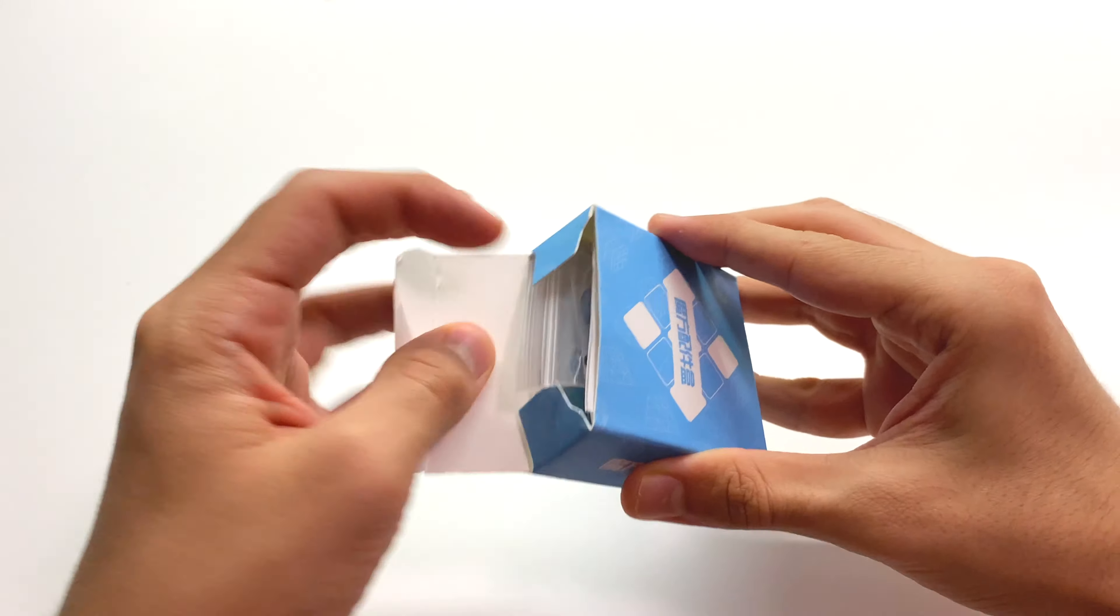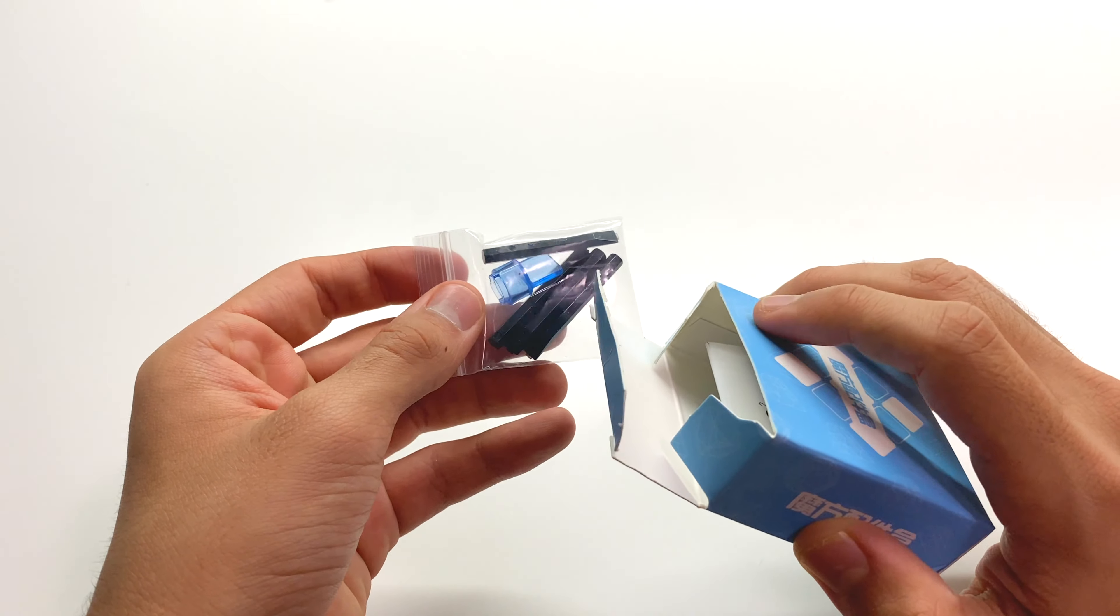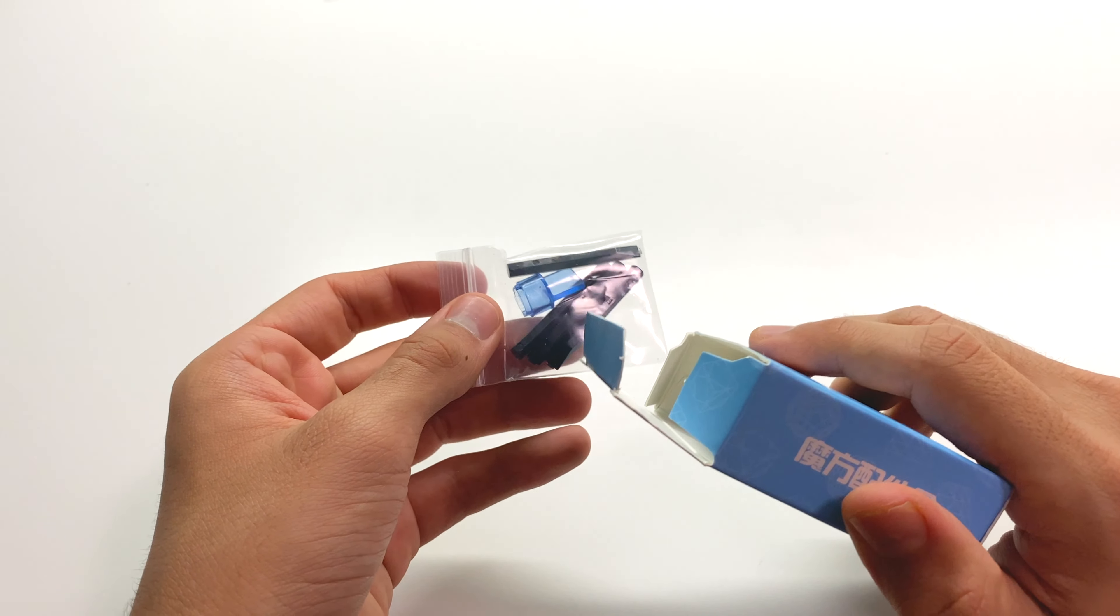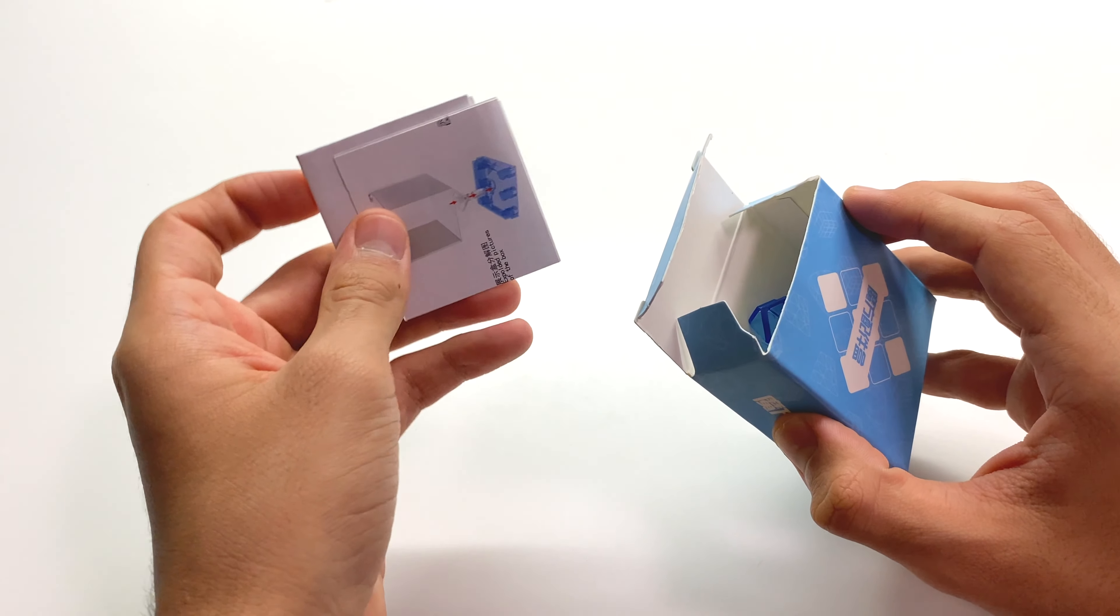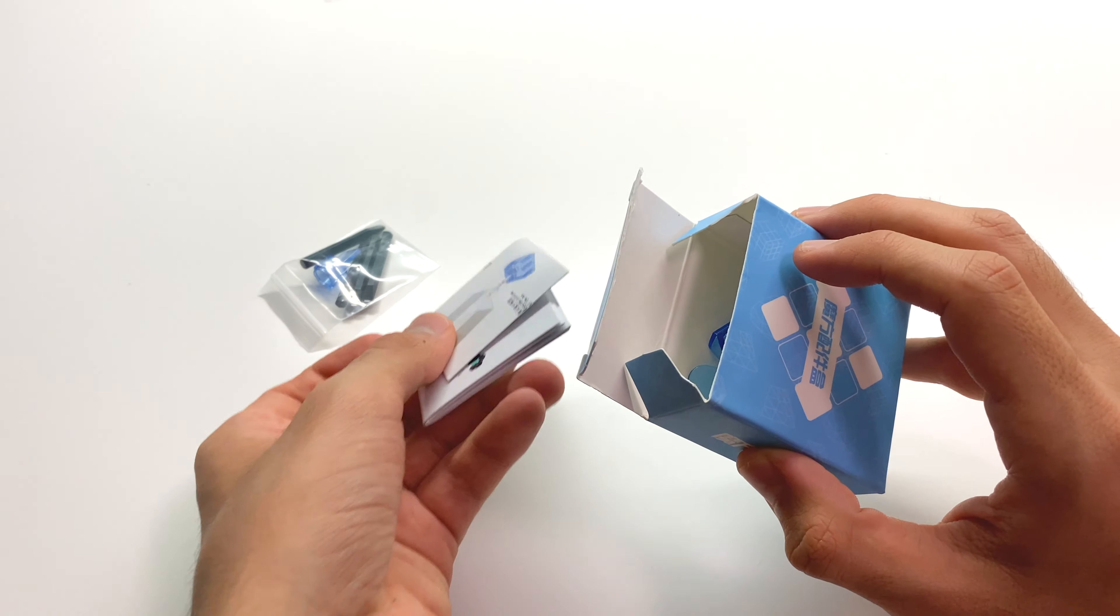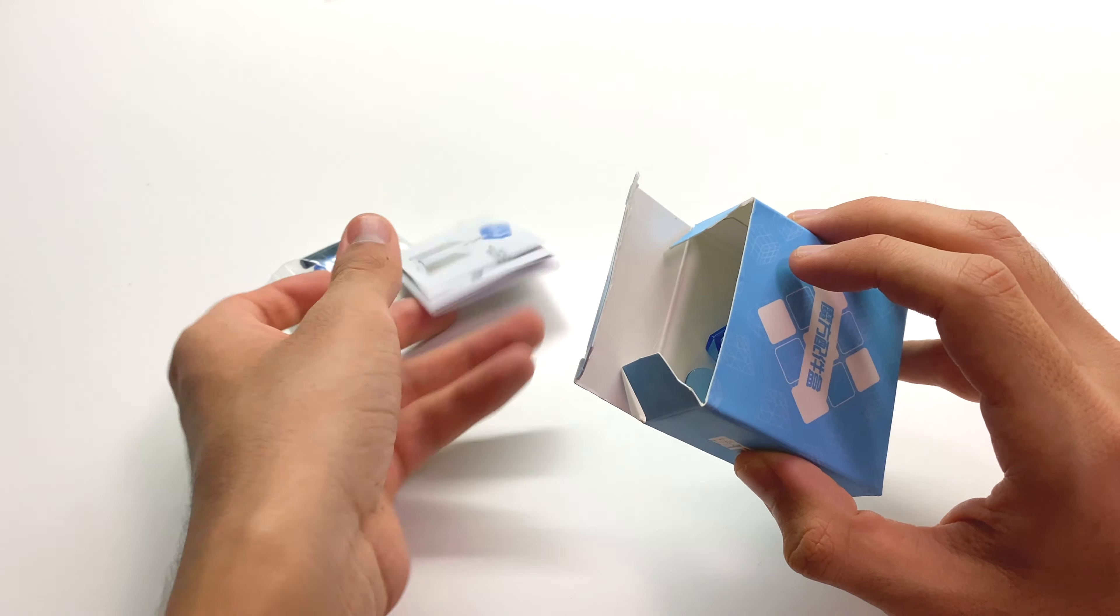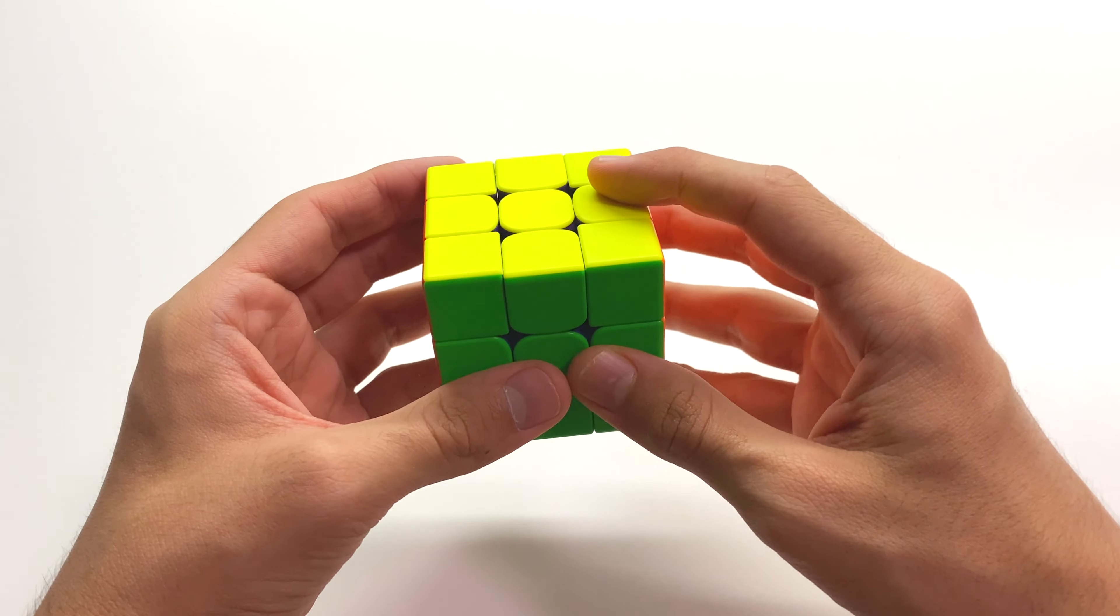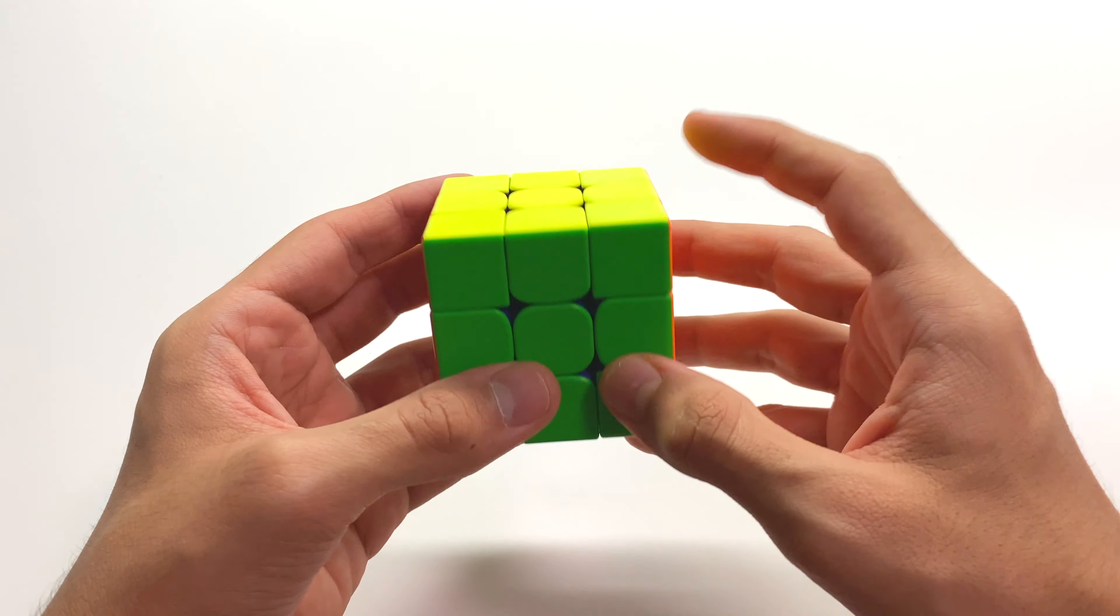Let's take a quick look at the accessories box. Here we have some classic Moyu tools. Here we have the magnet adjustment thing, which apparently keeps breaking. We've got some more pamphlets to tell us how the maglev tensioning system works. And we've got a few tools to adjust the tensions. I think I'll go and slow this puzzle down just a little bit and break it in with a bunch of solves. And then I'll let you guys know what I think.